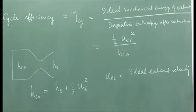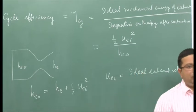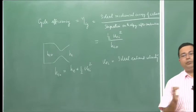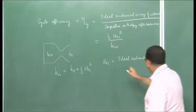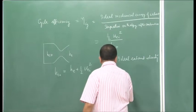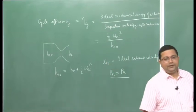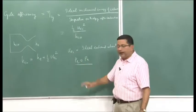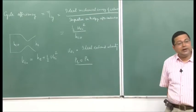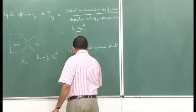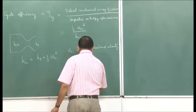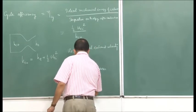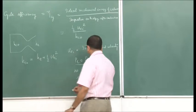Let us recapitulate what we have defined as the ideal rocket. We said the ideal rocket has ideal expansion, meaning P_E equals P_A — the exit pressure equals the ambient pressure. At the same time, there are no frictional losses, and the flow in the nozzle is isentropic.